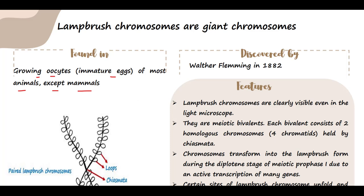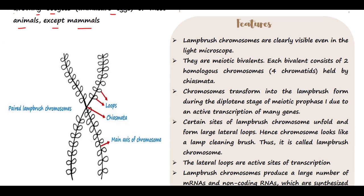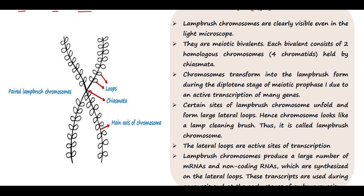Now let's see their features and how they look. Lampbrush Chromosomes are very large chromosomes and you can clearly see them under the light microscope. You can examine the immature egg cell and easily observe these chromosomes under the light microscope. They are actually meiotic bivalents.